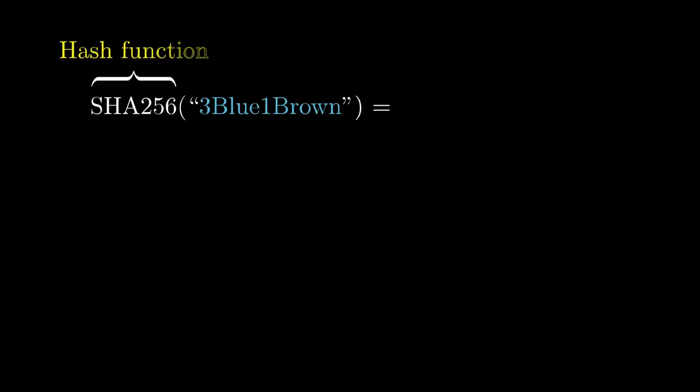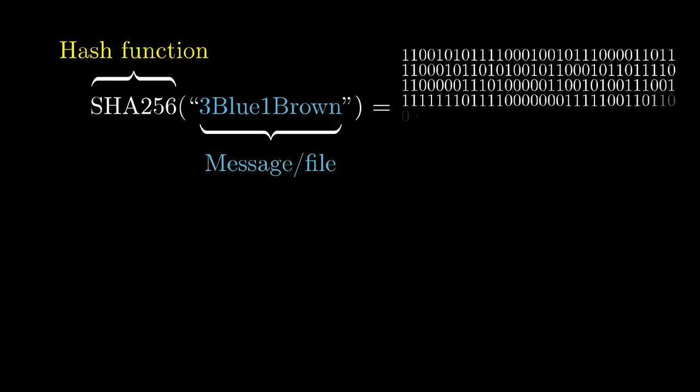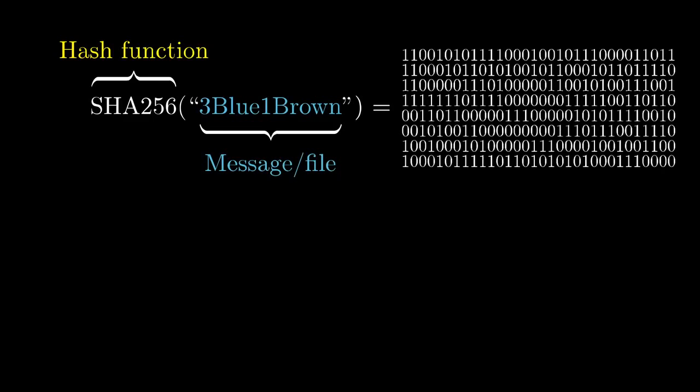So first things first, what's a hash function? The inputs for one of these functions can be any kind of message or file, it really doesn't matter. And the output is a string of bits with some kind of fixed length, like 256 bits. This output is called the hash or the digest of the message, and the intent is that it looks random.